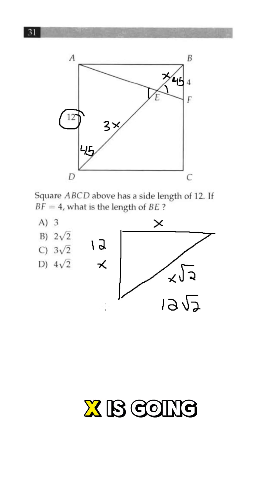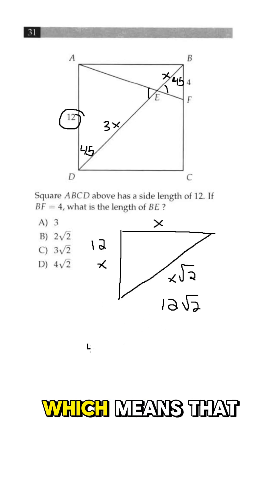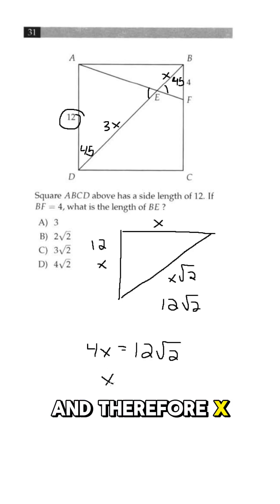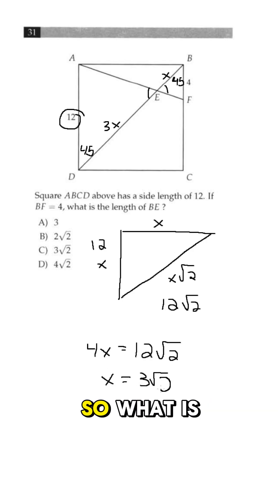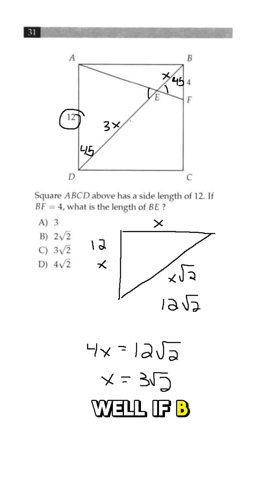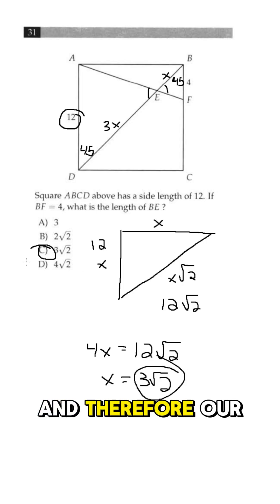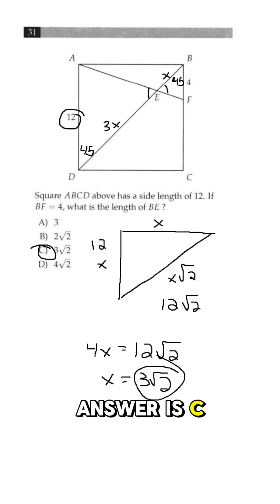So 3x plus x is going to equal 12√2, which means that 4x equals 12√2, and therefore x equals 3√2. So what is the length of BE? Well, if BE is just x, then it's going to be 3√2, and therefore our answer is C.